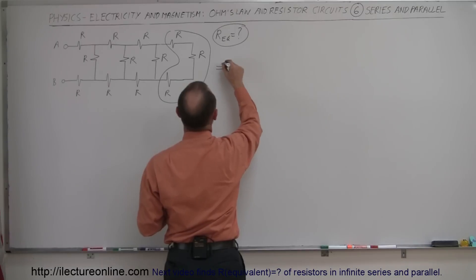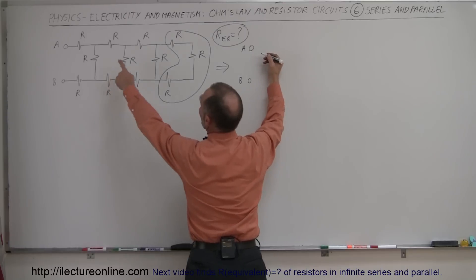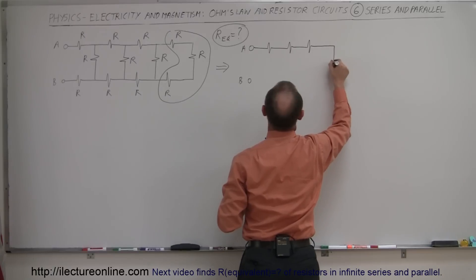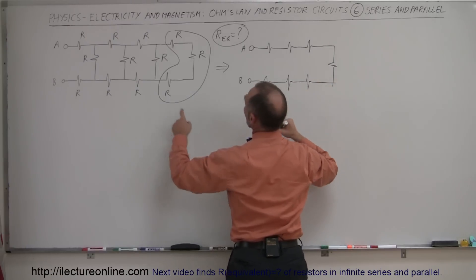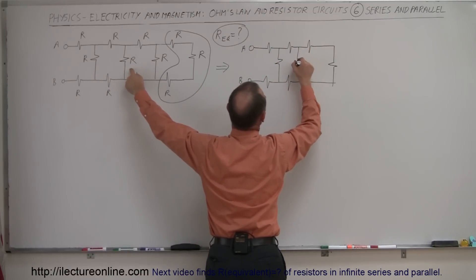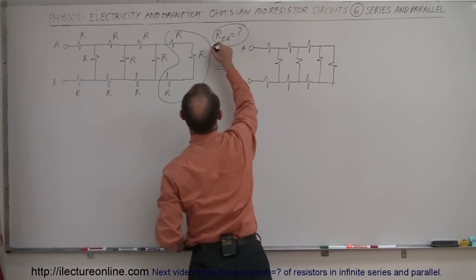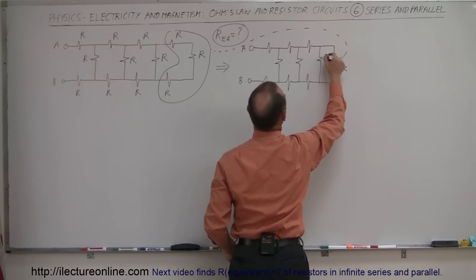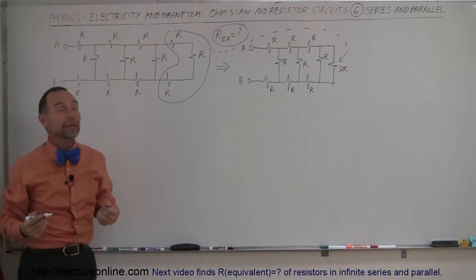Now we draw the equivalent circuit. We have our A and B terminal and we still have three resistors remaining. That back group of three resistors became the equivalent resistance of 3R, and all the other ones are still R. Again, remember they're in series, so we simply add them together and get 3R.